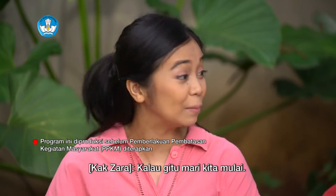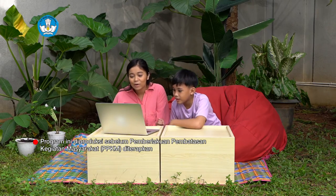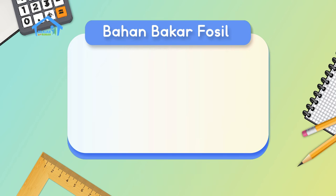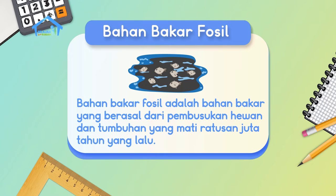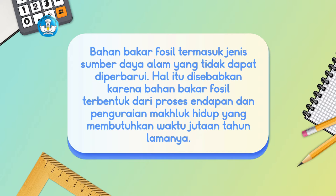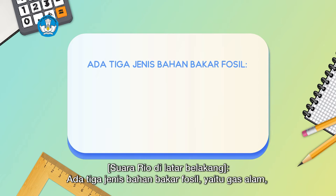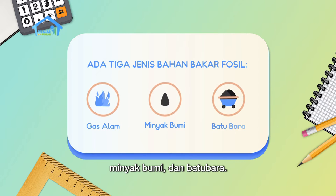Yaudah kalau gitu langsung aja yuk, Rio. Kita bacain. Teman-teman di rumah juga ikut membaca ya. Yuk kita mulai bacaannya. Bahan bakar fosil. Bahan bakar fosil adalah bahan bakar yang berasal dari pembusukan hewan dan tumbuhan yang mati ratusan juta tahun yang lalu. Bahan bakar fosil termasuk jenis sumber daya alam yang tidak dapat diperbarui. Hal itu disebabkan karena bahan bakar fosil terbentuk dari proses endapan dan penguraian makhluk hidup yang membutuhkan waktu jutaan tahun lamanya. Itulah sebabnya pemanfaatan bahan bakar ini harus dilakukan secara bijak dan bertanggung jawab. Ada tiga jenis bahan bakar fosil yaitu gas alam, minyak bumi, dan batu bara.